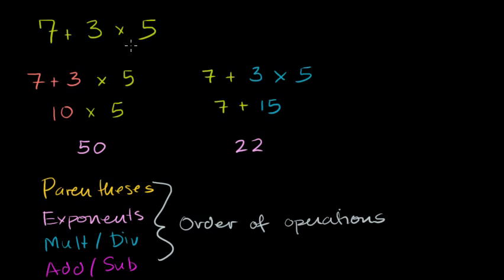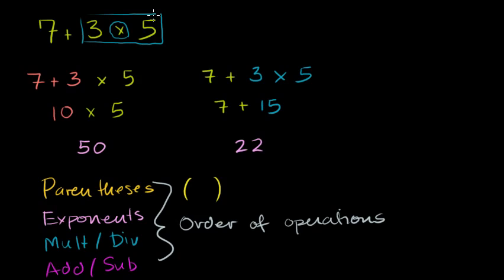So what does this tell us about 7 plus 3 times 5? We have no parentheses and no exponents, but we do have multiplication. The order of operations says to do multiplication and division first — it gets priority over addition or subtraction. So we do 3 times 5 first, which is 15, and then add the 7. 7 plus 15 equals 22. Based upon the agreed order of operations, 22 is the correct answer — the correct way to interpret that statement.